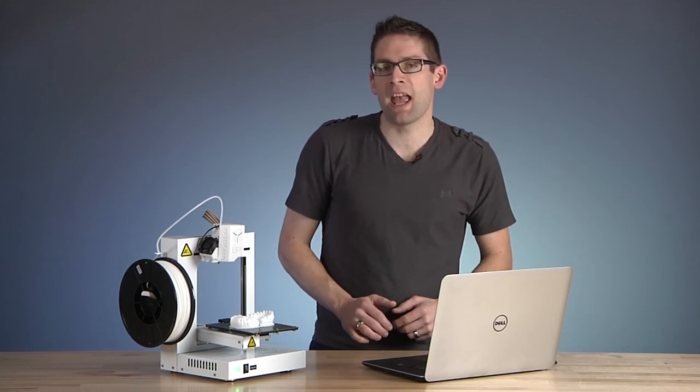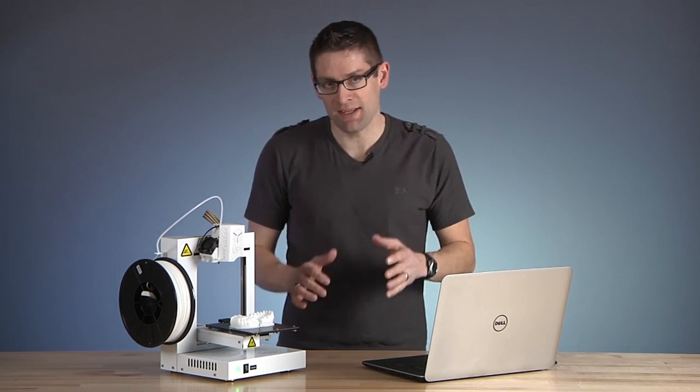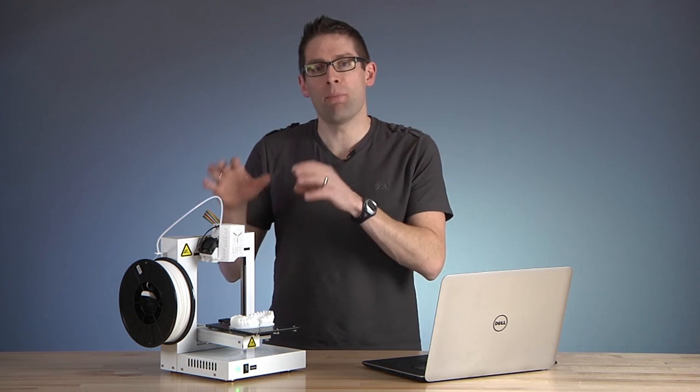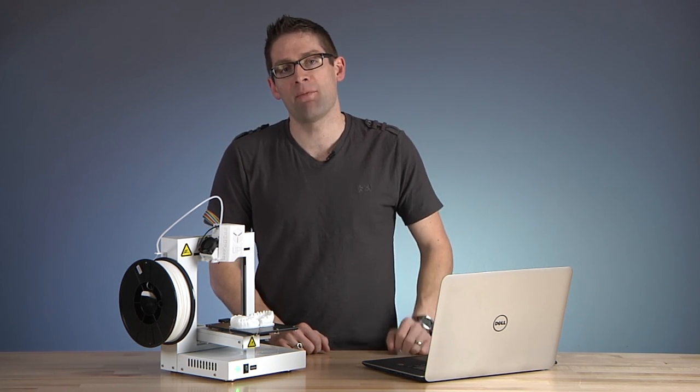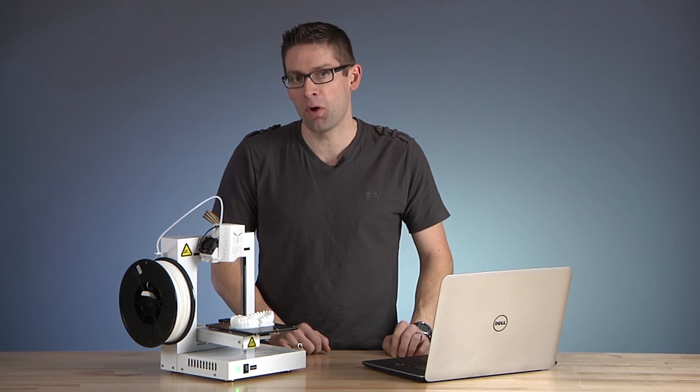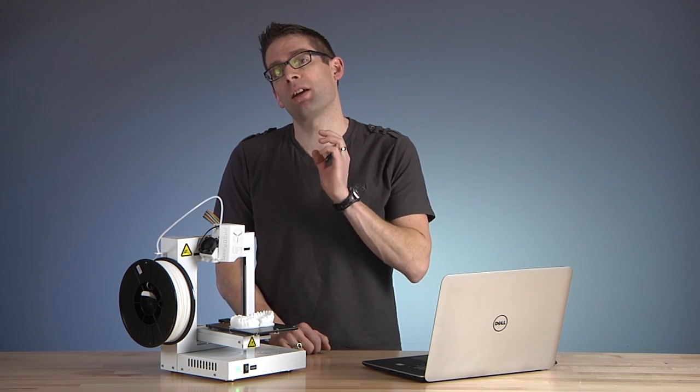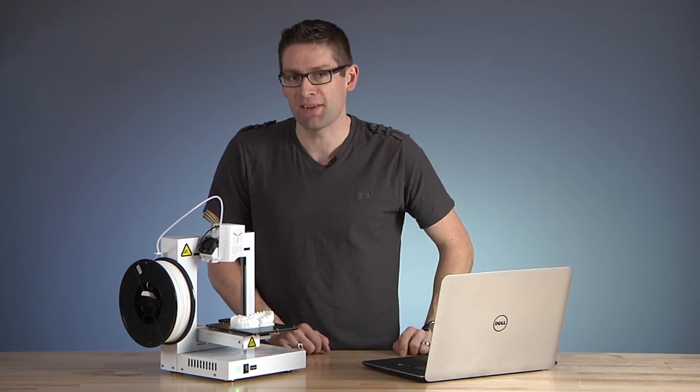If you're interested in printing ABS plastic and don't have a gigantic budget, the TierTime Up Plus 2 3D printer is a great option. And because it's integrated with Windows 8.1, you're going to be able to use compatible Windows apps and have more flexibility and control over 3D print jobs. If you want to know more about the Up Plus 2, go to pp3db.com or search their products on Amazon.com. Thanks a lot.